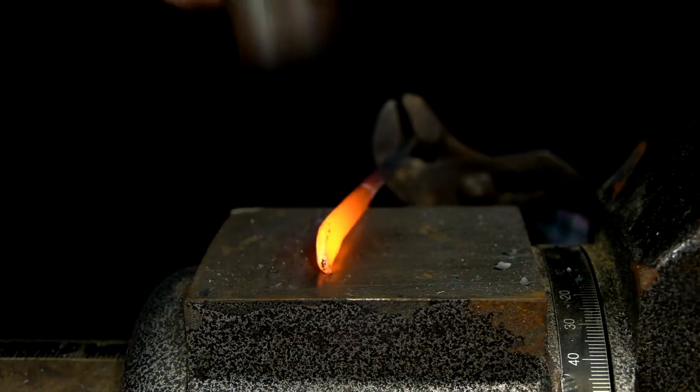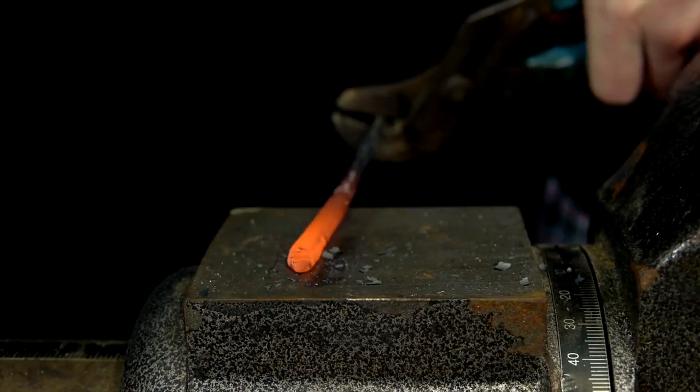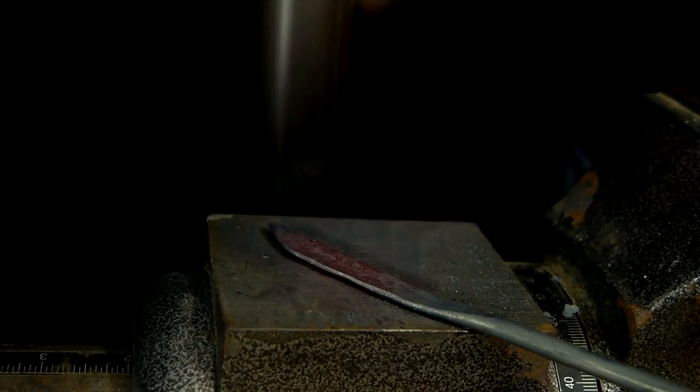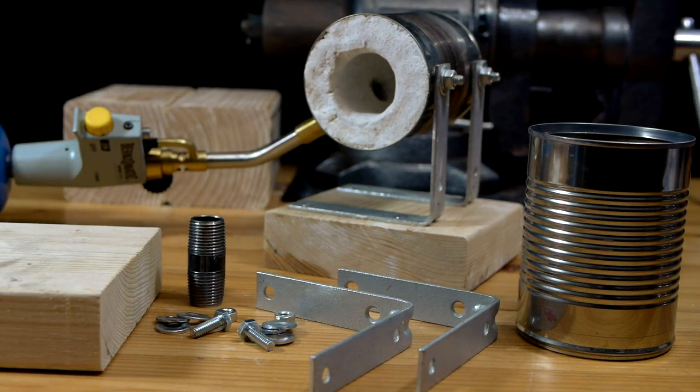In another video, I show the process that I used to make this knife, so be sure to check the video description for the link when this video is over. The body of this forge is built around a large soup can, and the fuel is provided by a standard propane torch.